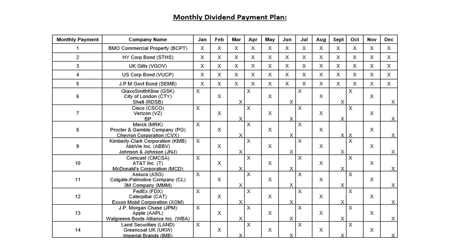From here you're into the quarterly payments. For payment six you could buy GlaxoSmithKline, City of London and Shell. For payment seven: Cisco, Verizon and BP. For payment eight: Merck, Procter & Gamble and Chevron. Payment nine: Kimberly Clark, AbbVie, Johnson & Johnson. Payment ten: Comcast, AT&T and McDonald's. Payment eleven: Asura, Colgate and 3M.